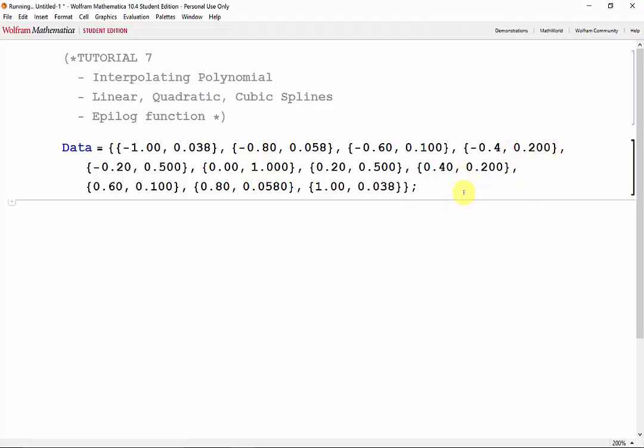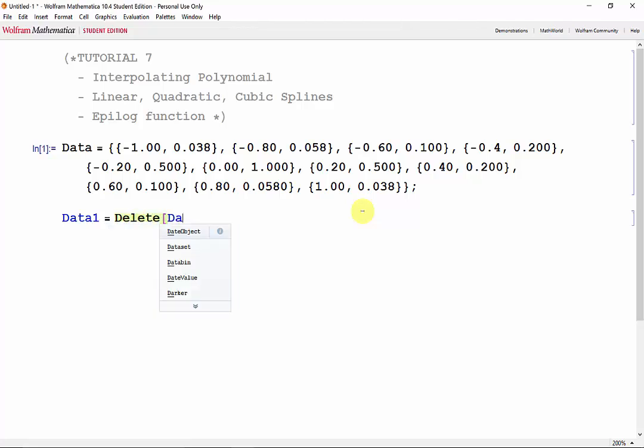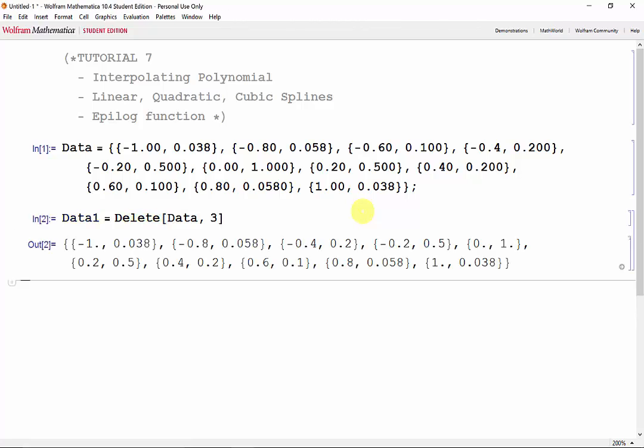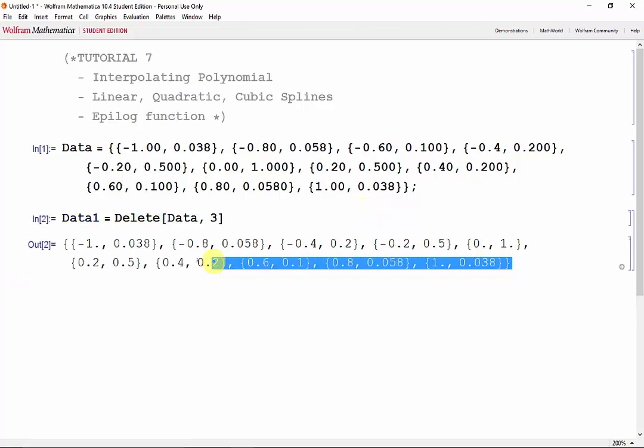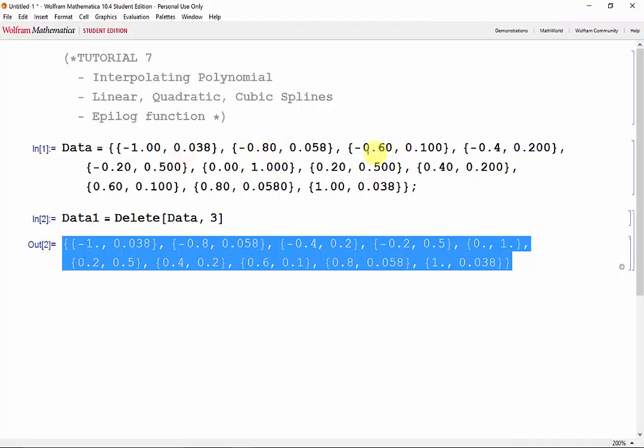Now, I'll shift enter to initiate that. If we wanted to remove any data points, say for example the third data point, we could do so using the delete function. So let's set data1 equal to delete data and the third data point. Shift enter, and now we have that same matrix without that third entry.